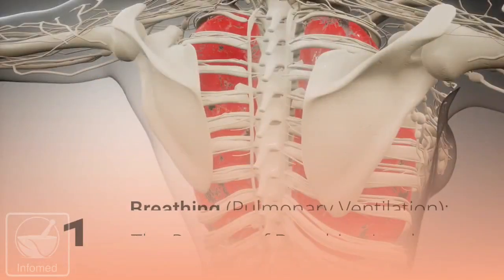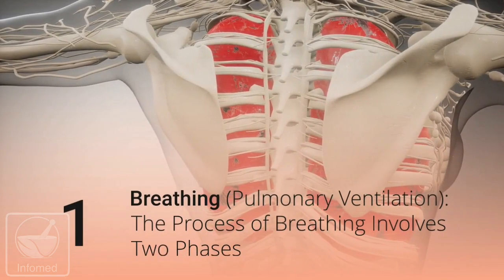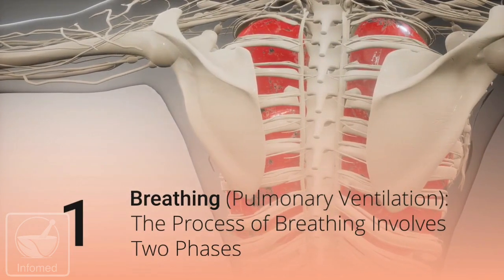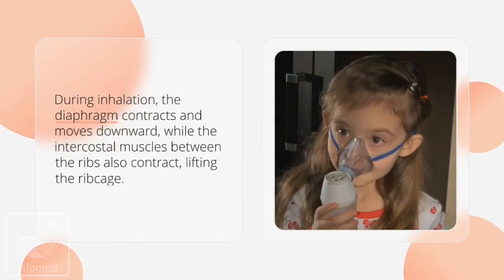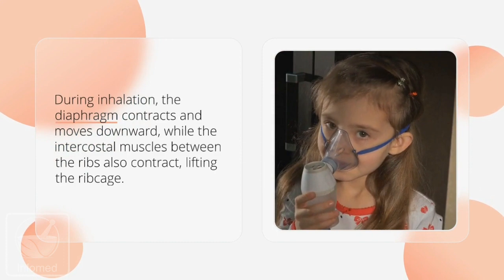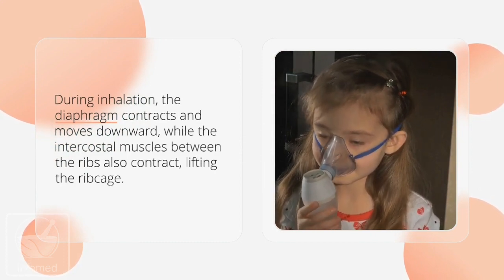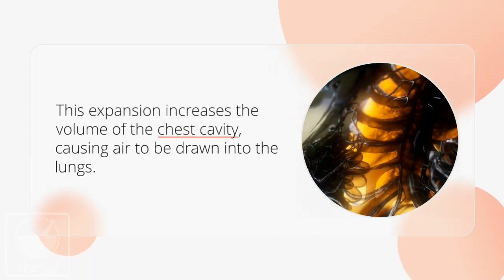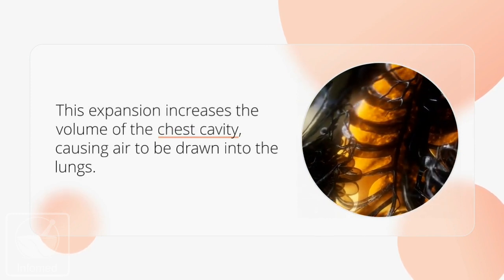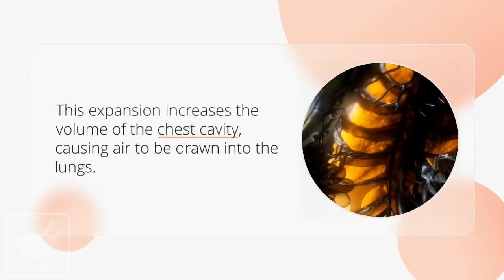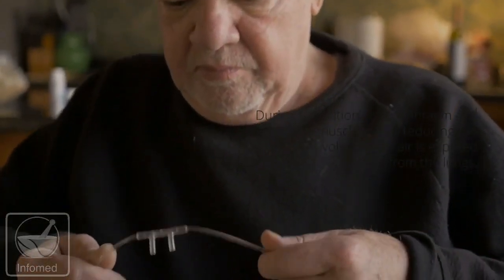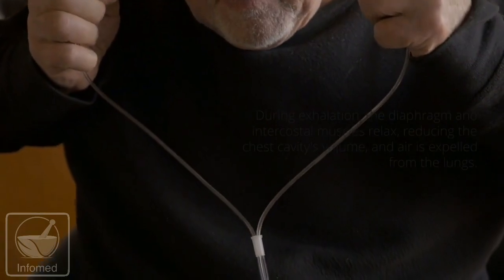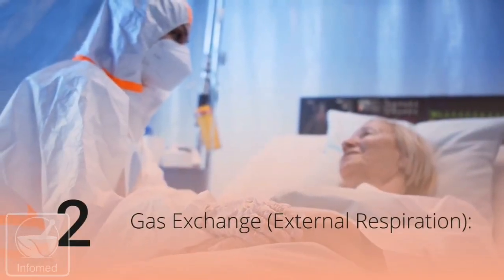How the respiratory system works. Number one: breathing, or pulmonary ventilation. The process of breathing involves two phases. During inhalation, the diaphragm contracts and moves downward while the intercostal muscles between the ribs also contract, lifting the rib cage. This expansion increases the volume of the chest cavity, causing air to be drawn into the lungs. During exhalation, the diaphragm and intercostal muscles relax, reducing the chest cavity volume, and air is expelled from the lungs.